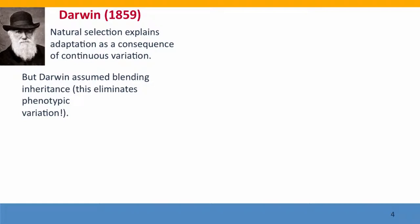Darwin came along and explained adaptation of different species as a consequence of natural selection acting on continuous variation in small populations — that natural selection would always slightly favour minor differences in these continuously varying traits, gradually shifting the population to better and better adaptation. But there was a problem underlying Darwin's theory: he, like his contemporaries, assumed that inheritance occurred by blending. This is a big problem for evolution by natural selection because blending inheritance eliminates phenotypic variation. Gradually, all the offspring are going to look like the average instead of like extremes of variation, and natural selection will have no variation to act on.